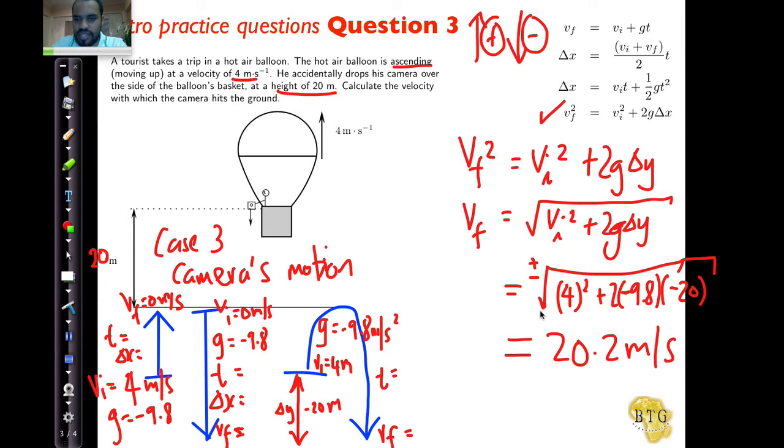This is plus minus when we take a square root, and this is going to be the negative value. Twenty point two meters per second downward because it is the velocity. That's a good case question. I'm going to do two more examples at examination level.